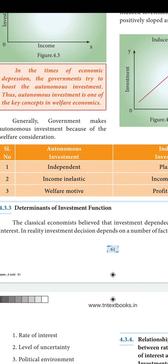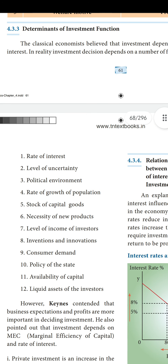Now we will learn about the determinants of investment function. Classical economists believed that investment depended exclusively on rate of interest. But in reality, investment decisions depend on a number of factors. The investment factors listed are twelve things: rate of interest, level of uncertainty, political environment, rate of growth of population — according to population also, investment will differ.